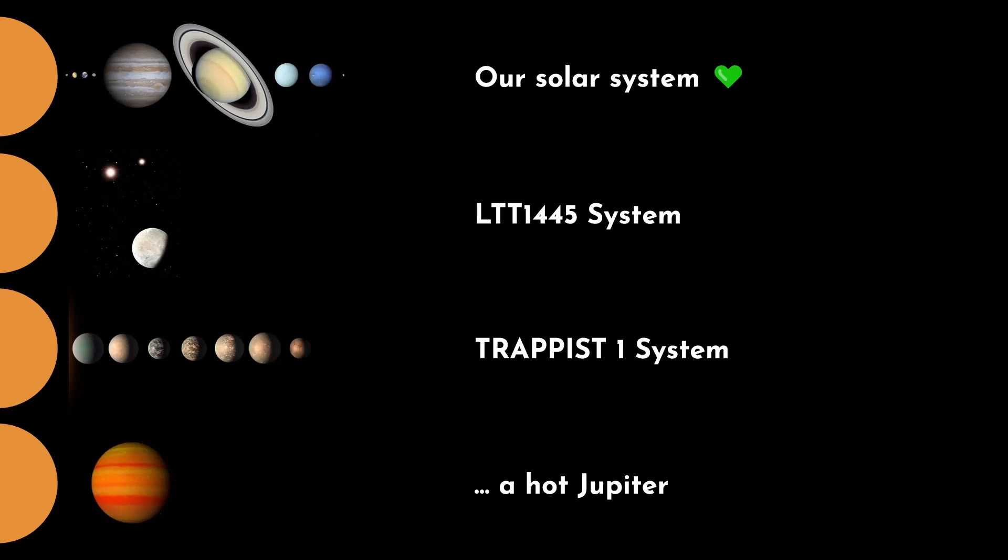Right below that is the TRAPPIST-1 system, which some of you might have heard about. There's a lot of hype about this one because it seems to be maybe the closest thing that we've found to Earth-like exoplanets. We think that some of these, maybe two or three of these planets, might be in the habitable zone of their star. But even so, even though it's the only kind of Earth-like, viable Earth-like system that we have, you can tell already that it still looks very different from our own solar system. At the bottom here, this is a system that doesn't really have a name because I just kind of grabbed an image of a hot Jupiter from Google Images.